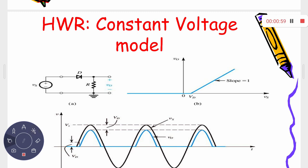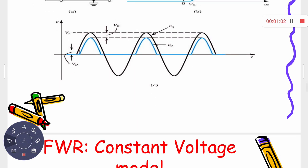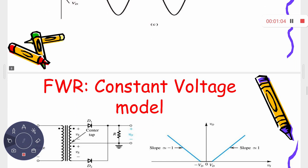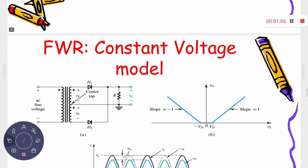Today we will extend this concept to the full-wave rectifier with a center-tap transformer. We have two diodes, D1 and D2, and I am assuming both follow the constant voltage model with the same cut-in voltage Vd. The turns ratio is 1:2, but that doesn't matter — the main point is that the center tap is grounded.